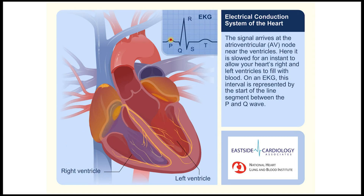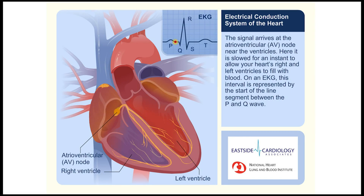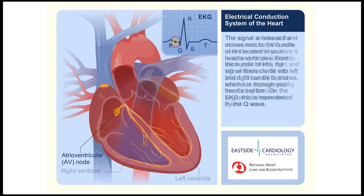The signal arrives at the atrioventricular node near the ventricles, where it is slowed for an instant to allow your heart's right and left ventricles to fill with blood. On an EKG, this interval is represented by the line segment between the P and the Q wave.